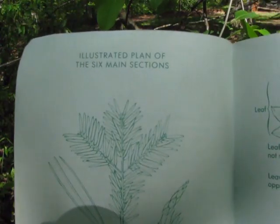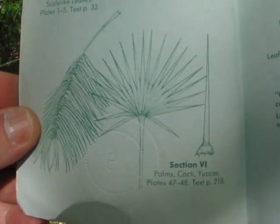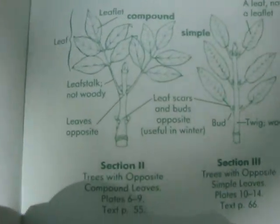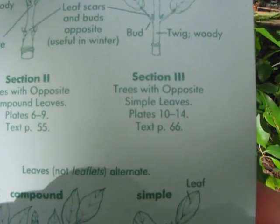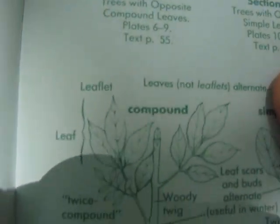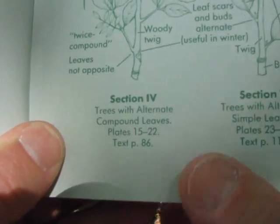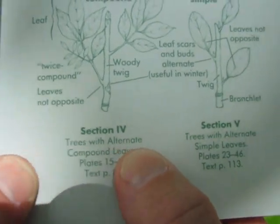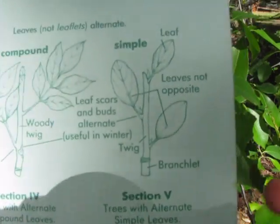This book is broken up into six main sections. Section one is trees with needle-like or scale-like leaves. Section six is palms, cacti, or yuccas. Section two has trees with opposite compound leaves — that's not our tree. Section three is trees with opposite simple leaves; while we have simple leaves, ours is alternate, not opposite. Section four is trees with alternate compound leaves — we have a simple leaf. Section five is trees with alternate simple leaves. That is our tree.